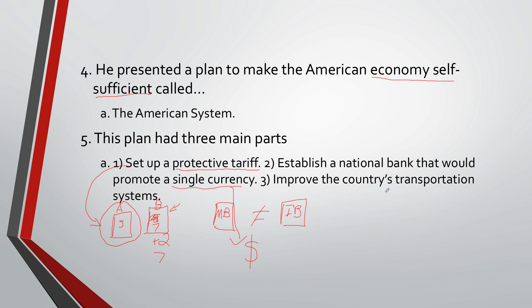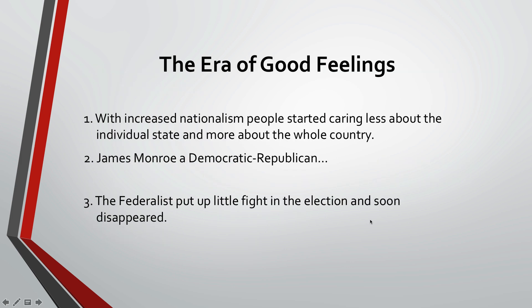The third part of the American System is to improve the country's transportation — making roads, canals, and building more railroads to make it easier to go from place to place, connect with people, do business and trade, and bring everybody closer together. This leads to what we call the Era of Good Feeling, which increased nationalism. People start caring less about individual states and more about the betterment of the whole country.